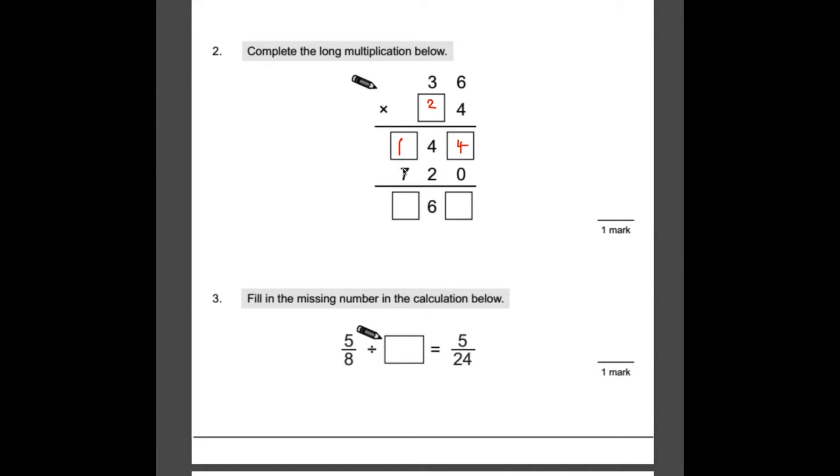Next all we need to do is check that our calculation is correct for this section here. So they put the 0 as a placeholder. 2 times 6 would be 12, so you put the 2, they'd carry the 1 up there. 2 times 3 is 6, add the 1 is 7. So that bit definitely works. All we've got to do now is add our answers we put in to 720. 4 add nothing is 4, 4 and 2 is 6, 1 and 7 is 8. So our answer is 864.